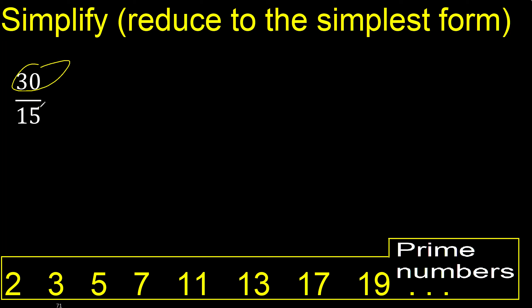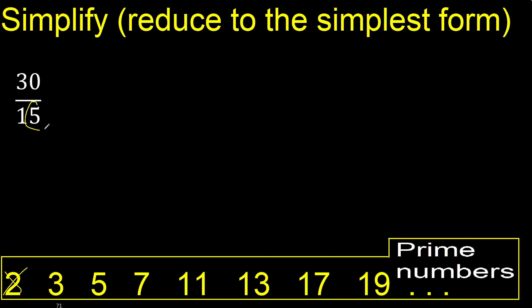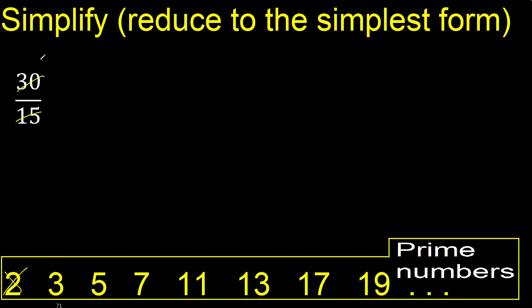30 and 15 cannot be divided by 2 because the last digit is not even. Divided by 3, yes — 30 divided by 3 is 10, and 15 divided by 3 is 5.